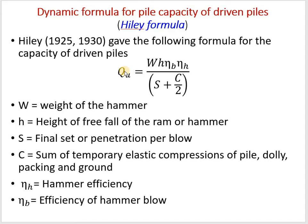For the value of s: if the average settlement per blow is directly given, use that value. If the total penetration in the last several blows is given — say 25 mm in the last 10 blows — then take the average: 25 divided by 10, giving the final set per blow. The value c is the sum of temporary elastic compressions due to the pile dolly and packing as well as the ground. This value is usually given in the problem.